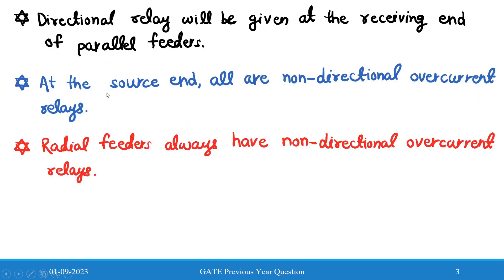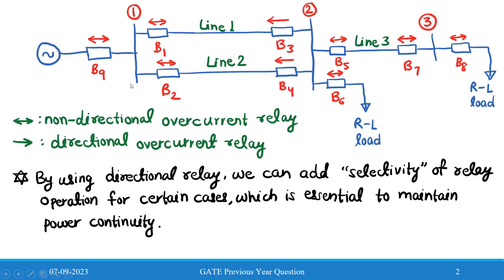The second point is that at the source end, all relays are non-directional overcurrent relays. We have the generator, and the relays beside the generator on the source side are all non-directional overcurrent relays — therefore R1, R2, and R9 will be non-directional overcurrent relays.